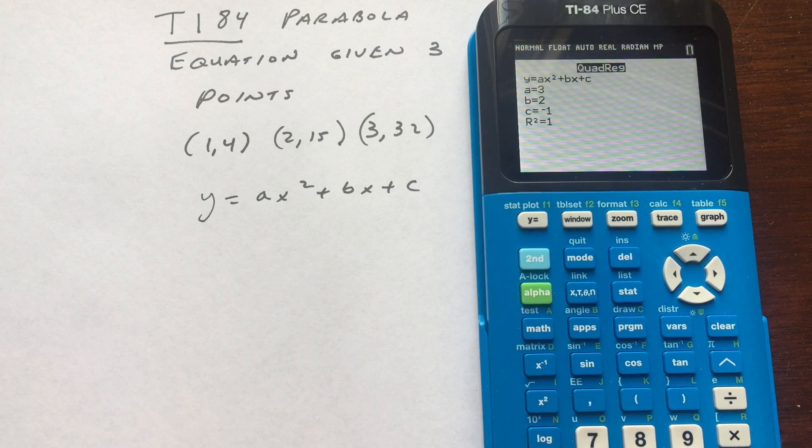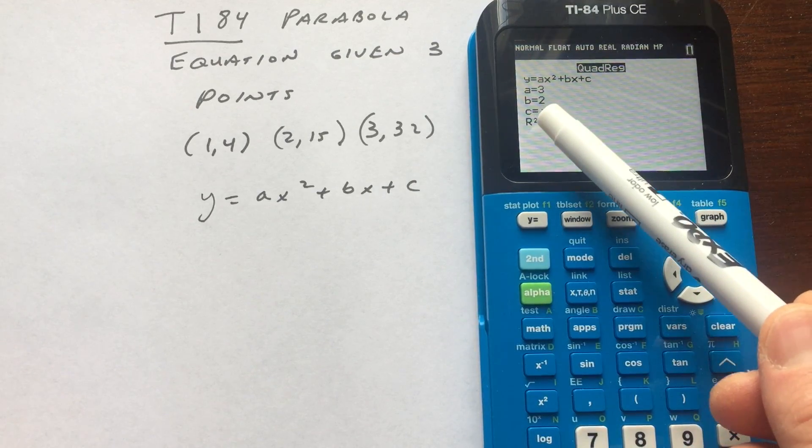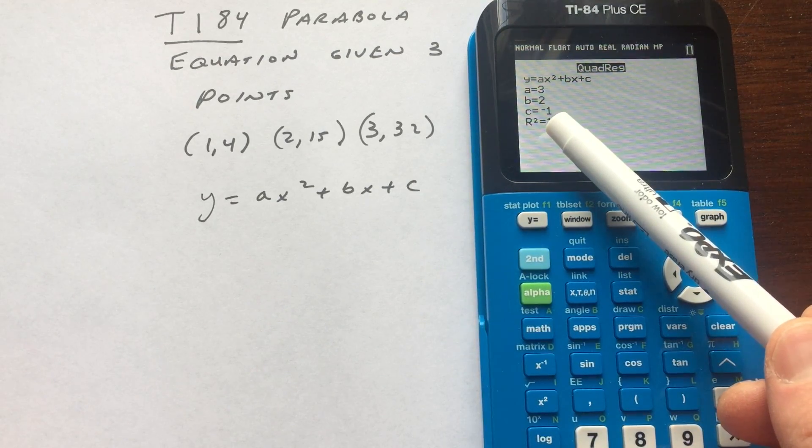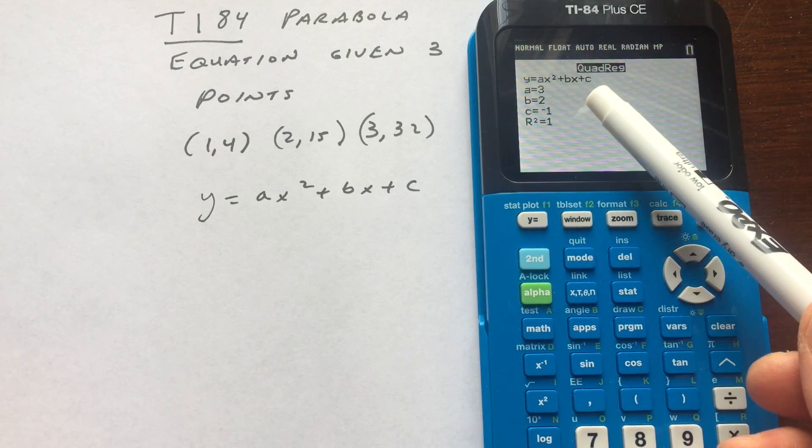And you can see what it's doing is it's giving you the A value here, which is 3, the B value, which is 2, and the C value is negative 1. You just have to substitute those in for A, B, and C.